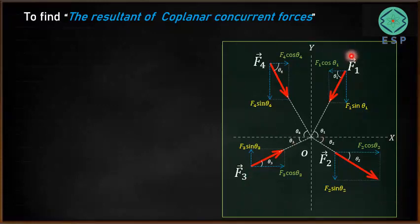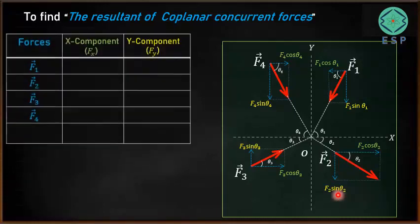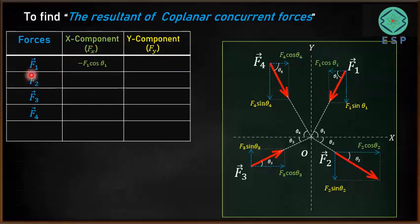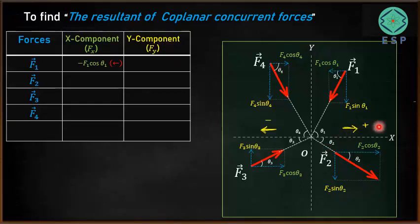We are now able to resolve all the forces along X and Y directions. We will make a table listing all the forces — F1, F2, F3, and F4 — along with their respective X and Y components. There is an important sign convention to follow: if a force is acting towards the positive direction of the X axis, it is taken as positive; if towards the negative direction of the X axis, it is taken as negative.